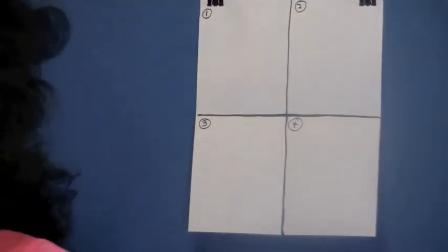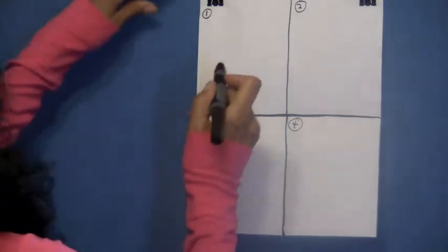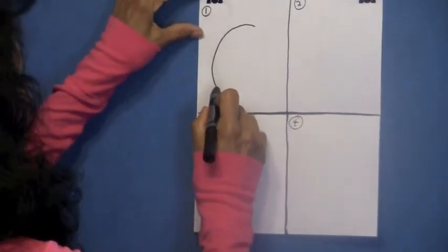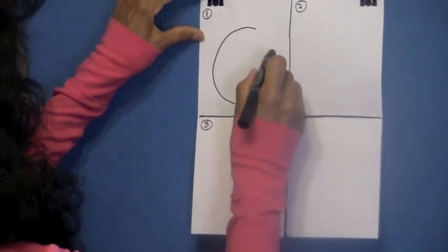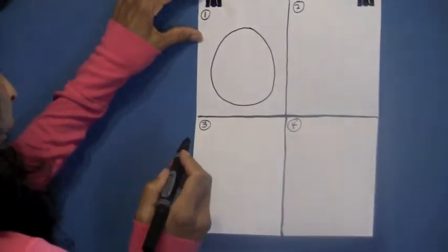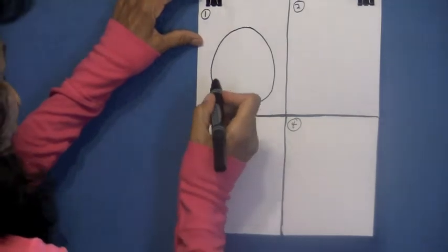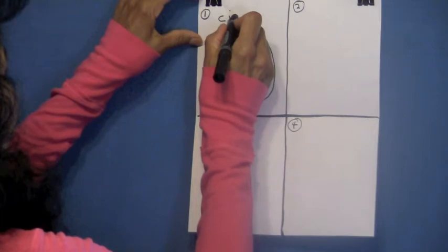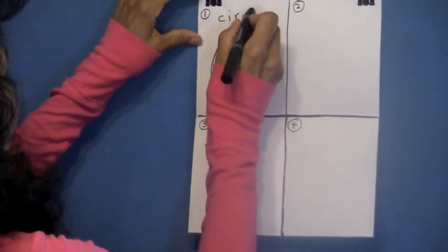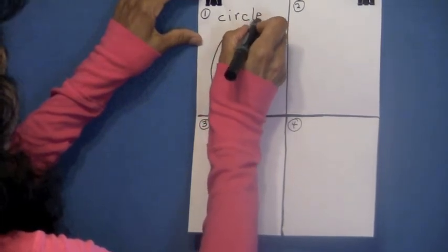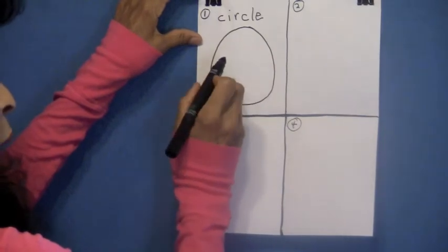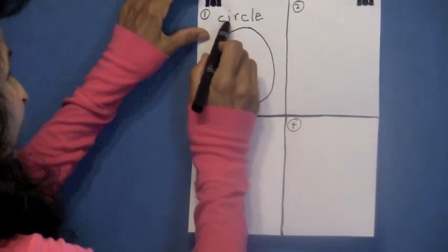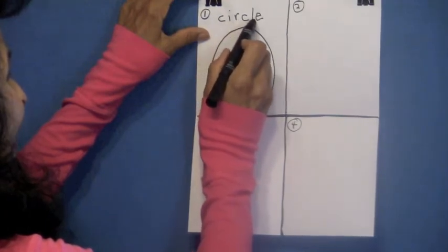Boys and girls, the first shape that we are going to review is a circle. So I want you to draw a circle in box number one. Just do the best you can. And how do we spell circle? Say it with me, please. C-I-R-C-L-E. And I want you to write that with me also.